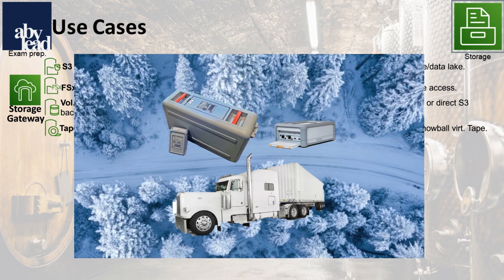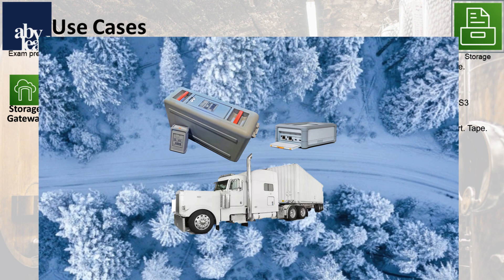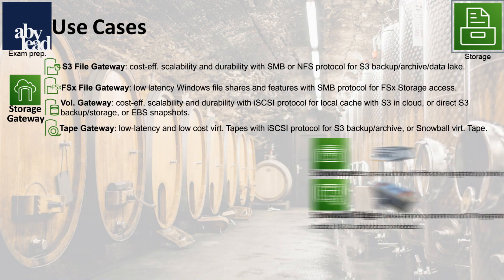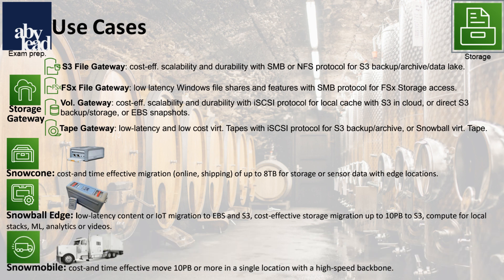If you have limited connections or infrastructure, you use one of the three Snow devices to ship or transfer data. With Snowcone, you process on or offline from sensors or servers with Windows, Linux, or macOS to S3, EFS, or FSx Windows. If you need to move 80 terabytes in one week, you use the larger Snowball Edge device to support performance computing or to store data in S3 or EBS. And when size matters, you transport exabytes with the Snowmobile truck container, with or without computing.